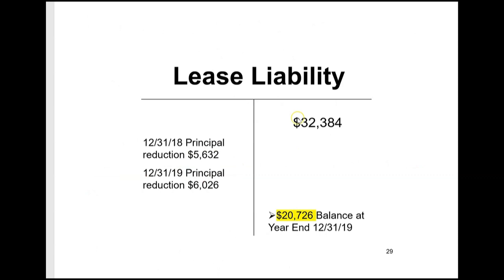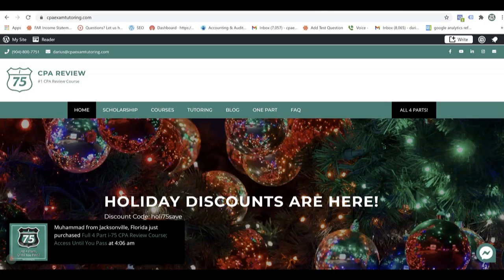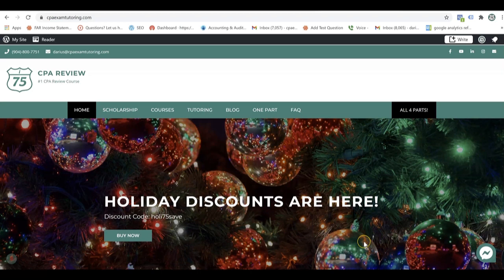Looking at the T-accounts for year two: lease liability started at $32,384, reduced by $5,632 at end of year one, then $6,026 at end of year two, bringing us down to $20,726 at December 31, 2019. The right-of-use asset followed the same path, also arriving at $20,726. When there's no immediate first payment, the right-of-use asset and the lease liability will always stay together. If you found this operating leases video helpful, please like and subscribe and visit cpaexamtutoring.com to get on I-75.